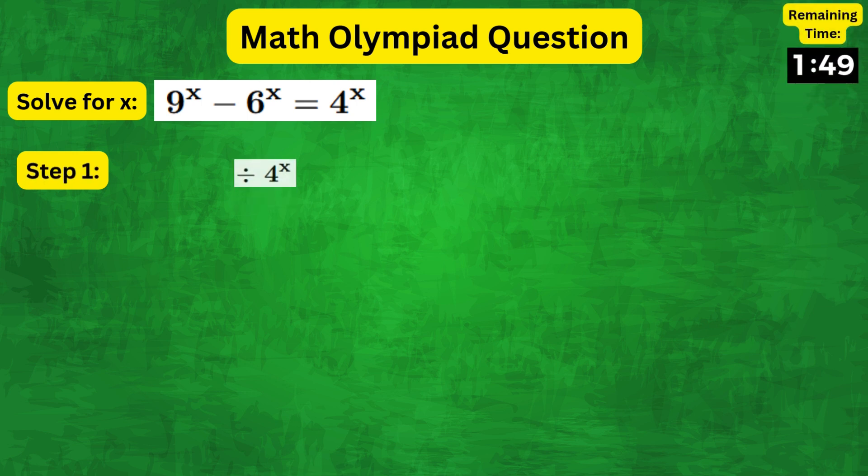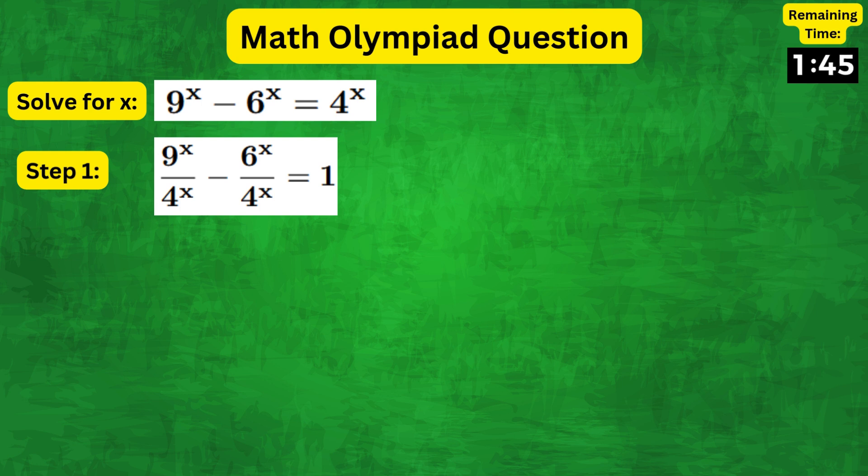So as a first step, we can divide both sides by 4 to the x to get 9 to the x over 4 to the x minus 6 to the x over 4 to the x equals 1.